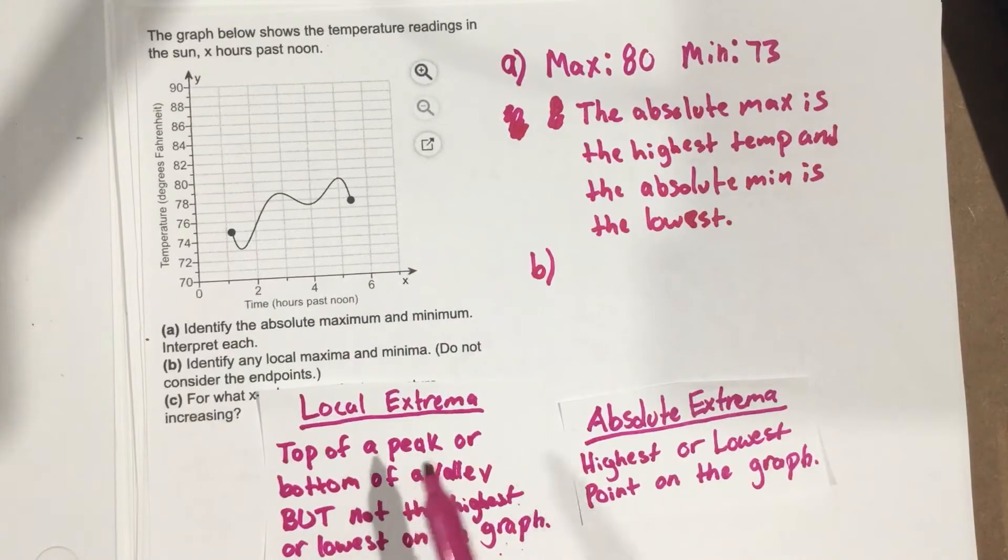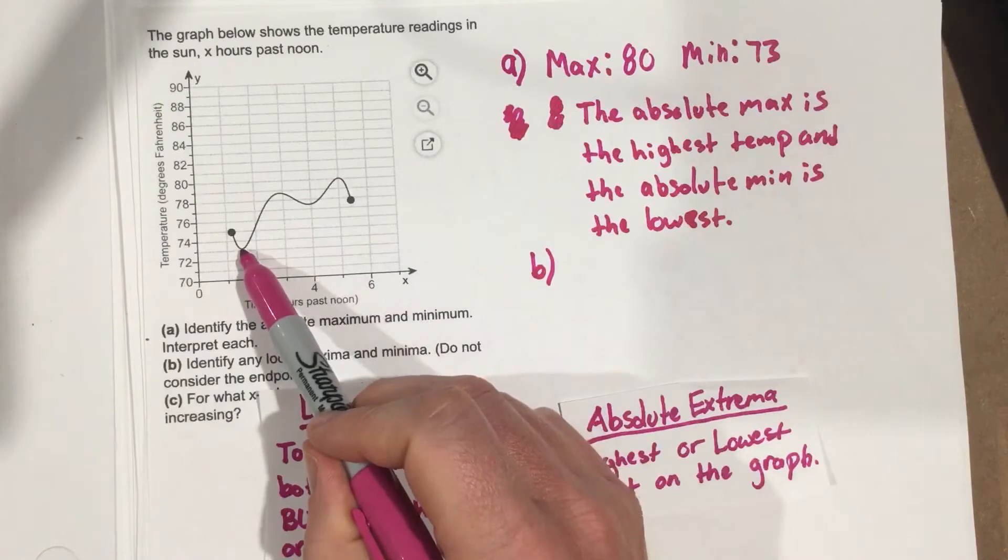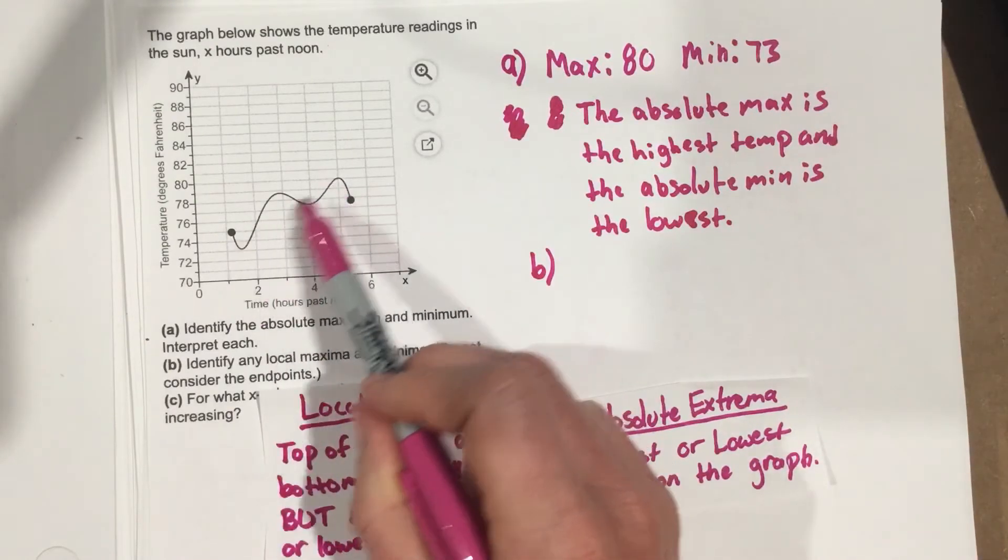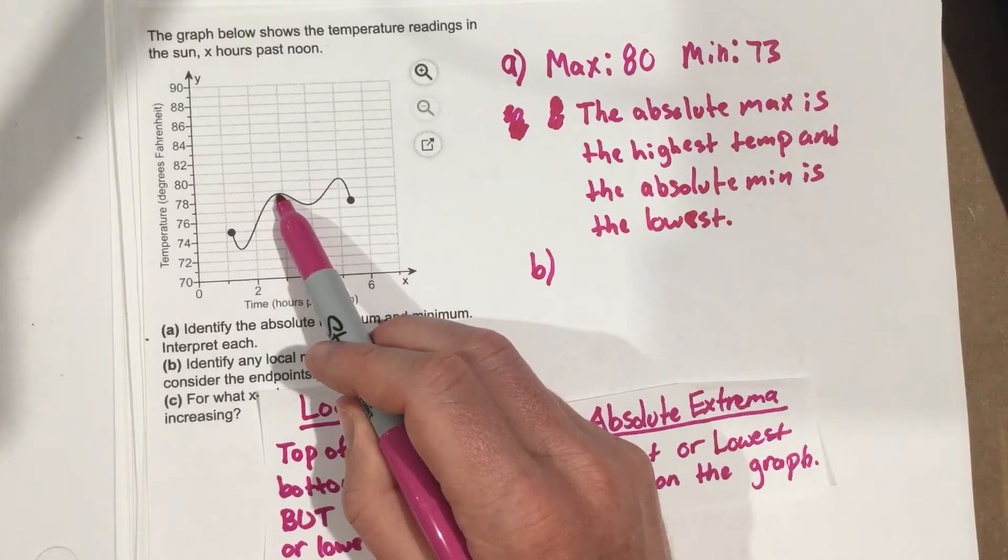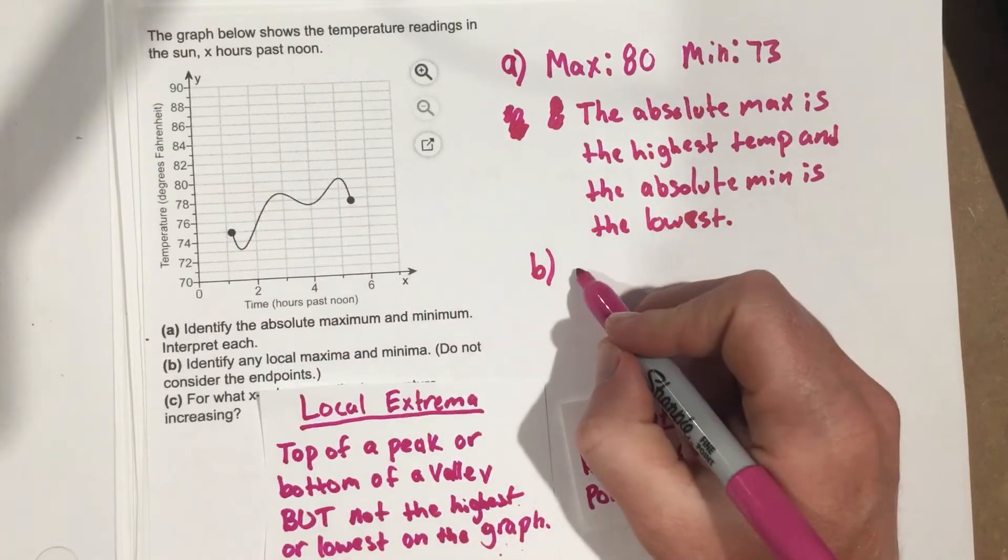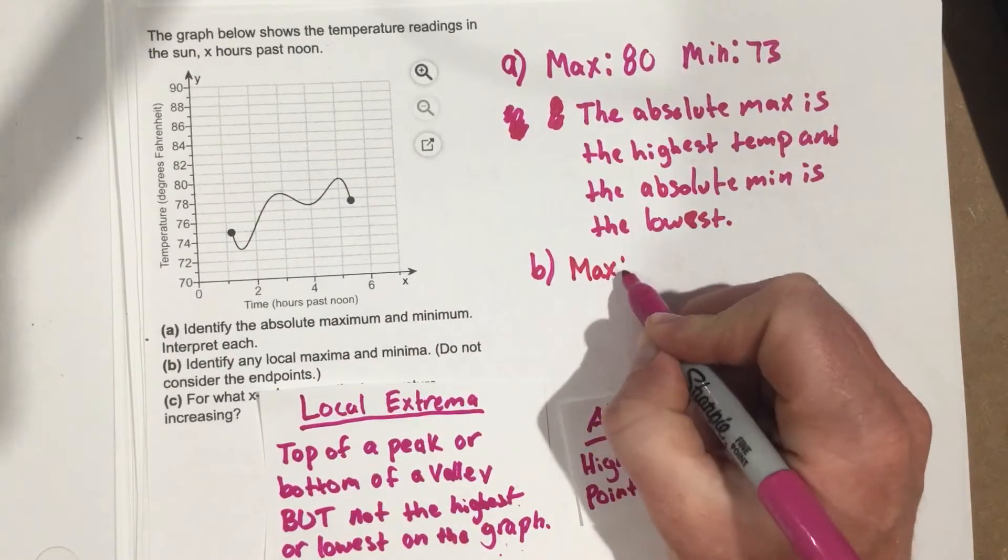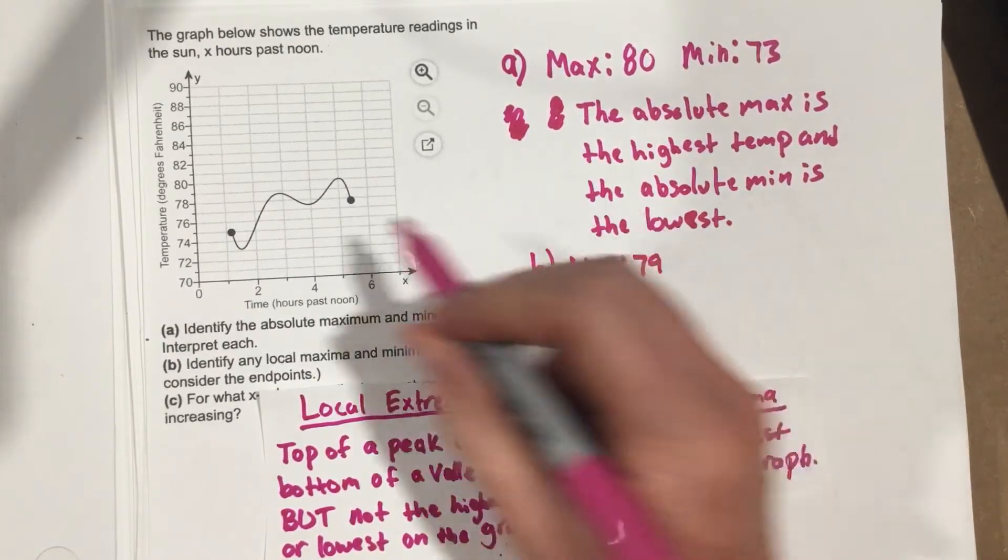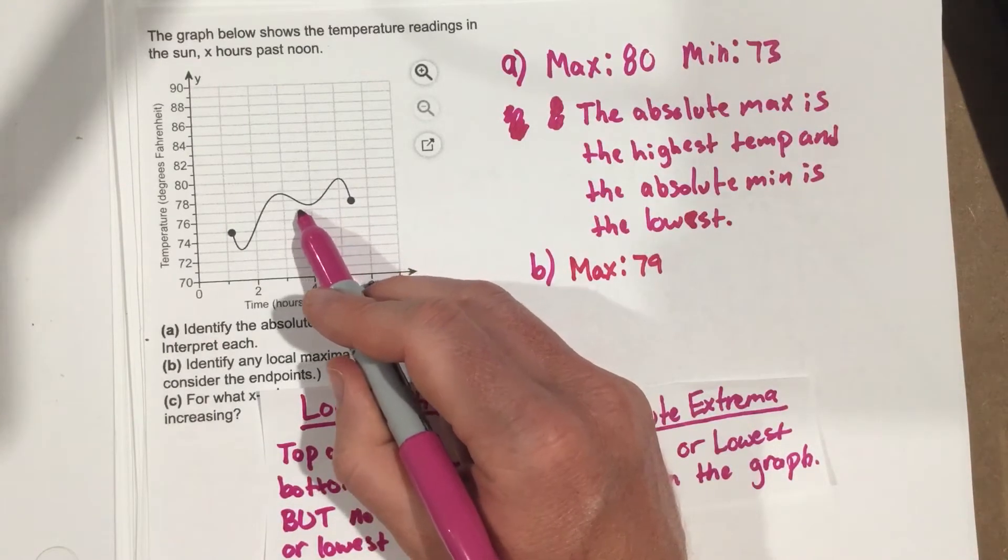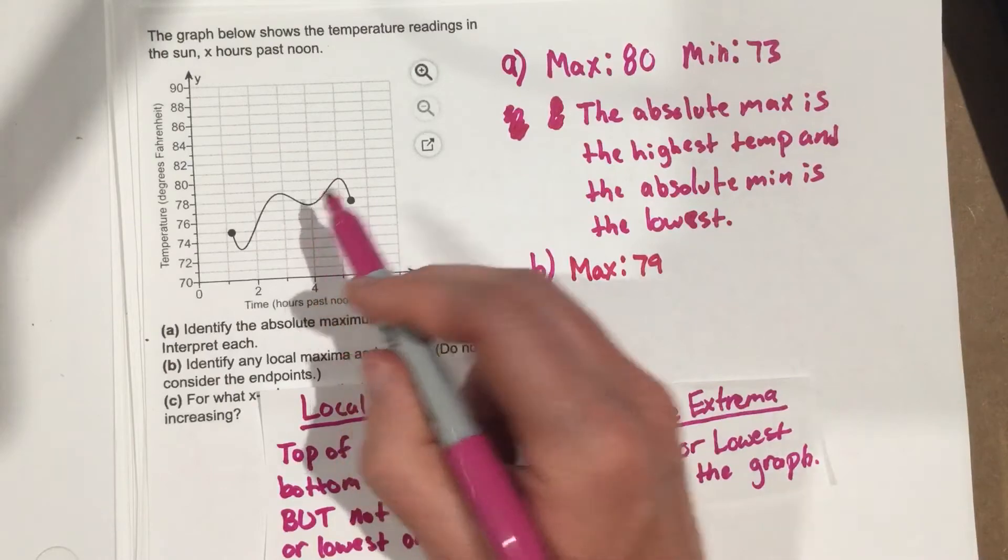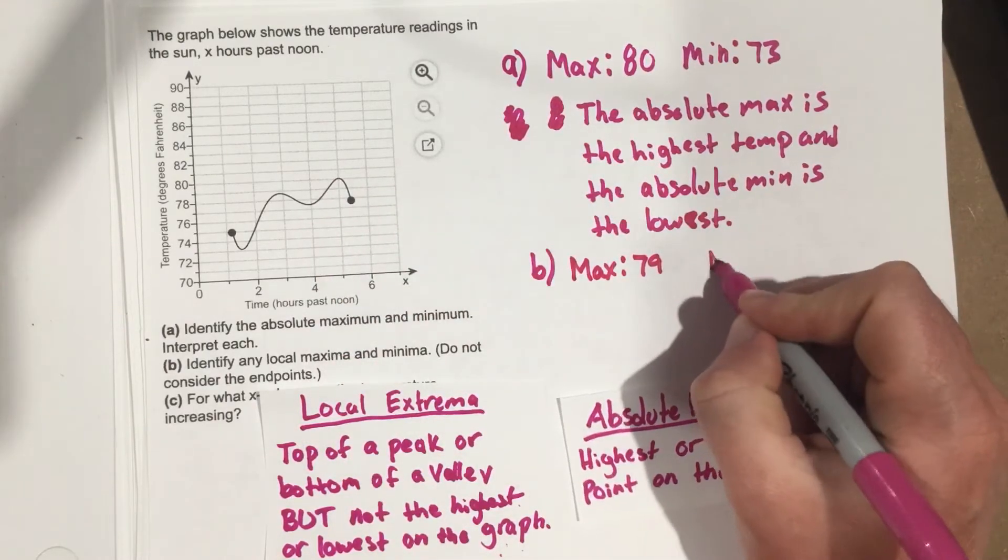Let's look through and find any peaks or valleys. Ignoring the absolute min and max, we have a local max of 79 and a local min of 77.